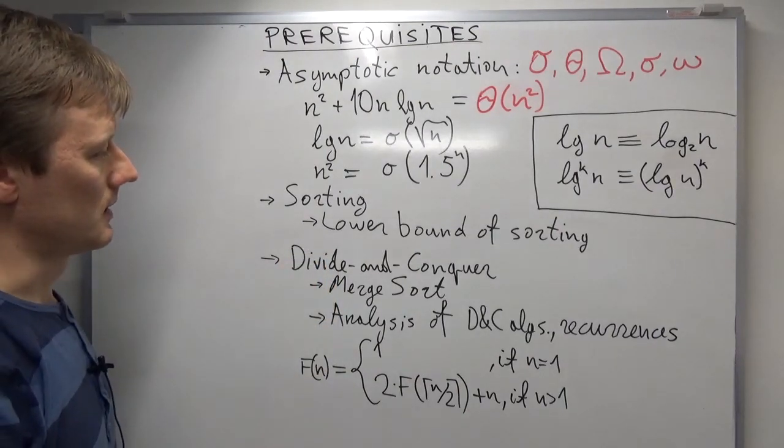You should be able to analyze divide and conquer algorithms by writing recurrences and then solving recurrences, finding solutions to recurrences. For example, you should be able to write that the running time of merge sort can be described by this kind of recurrence.